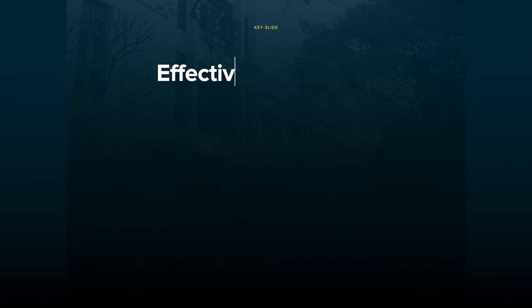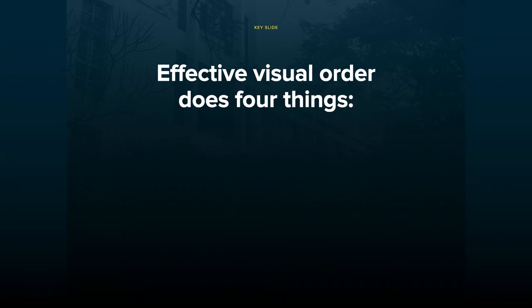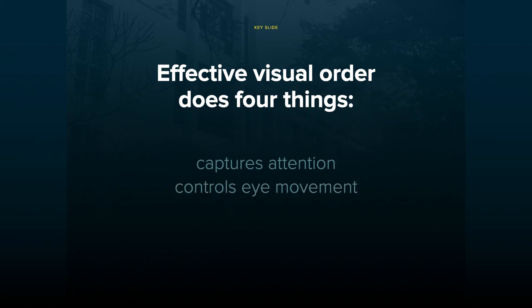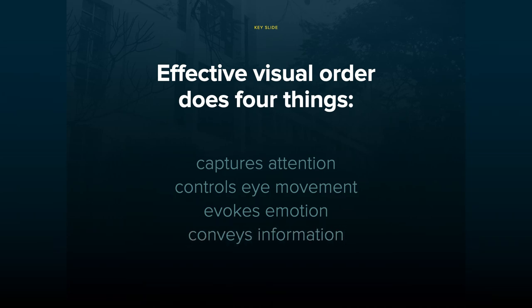Effective visual order does four things: to begin with, it captures the attention of the viewer; it controls his eye movement and navigates him through the message. The content and the arrangement of elements evokes an emotion. Lastly, it conveys information to create a desired action.